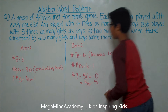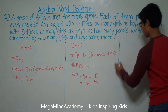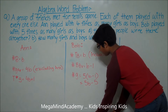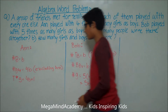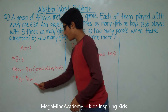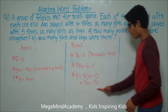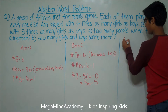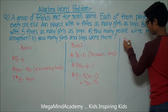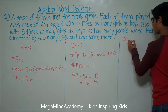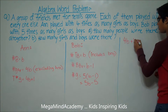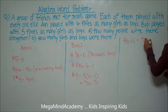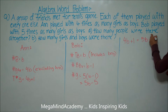Now we know that the number of girls does not change. So this means that 4B plus one is equal to 5B minus five.